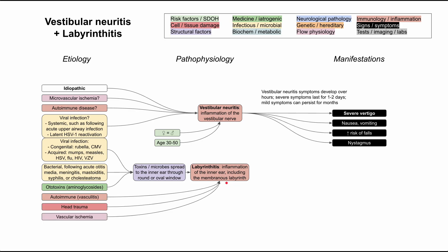There are some other things that directly cause labyrinthitis: autoimmune diseases like vasculitides have been shown to cause it, head trauma can cause it, and vascular ischemia — lack of blood flow and oxygen — can cause labyrinthitis as well. Regarding risk factors, age 30 to 50 years old is the most common age group. This condition does have a gender predisposition — women are more likely to get labyrinthitis than men.